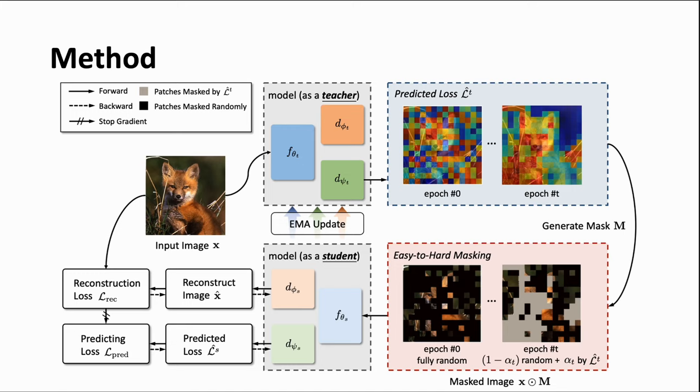resulting in an easy-to-hard masking manner. Finally, only visible parts are fed into the student to train the image reconstructor and the loss predictor.